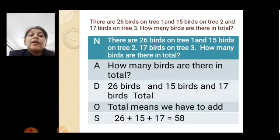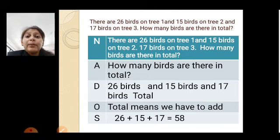So, total means which operation will come? Addition. So, twenty-six plus fifteen plus seventeen is equal to the answer 58. So, what we learned in the previous lecture, we did addition of two numbers. Here, we did addition of three numbers together.